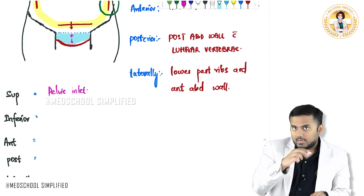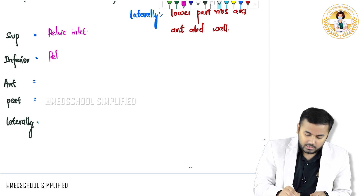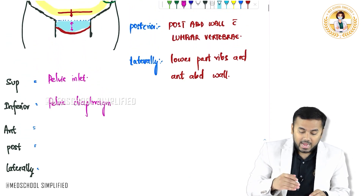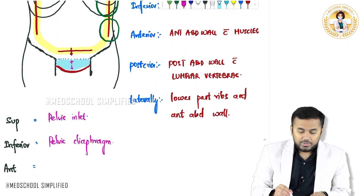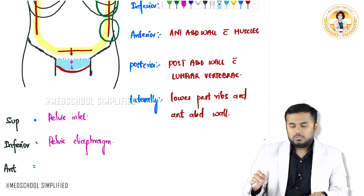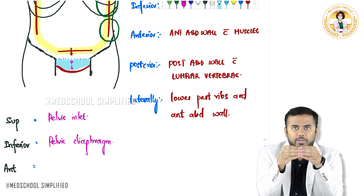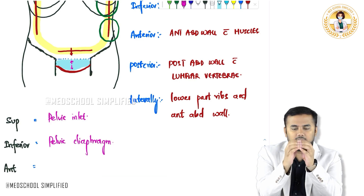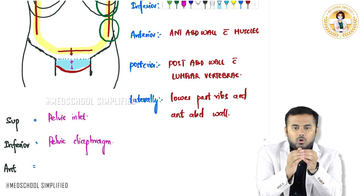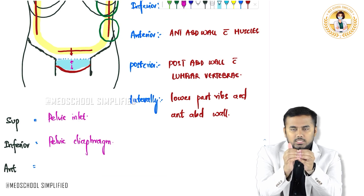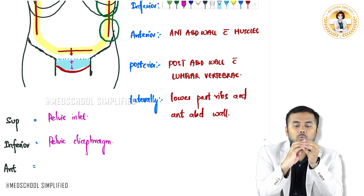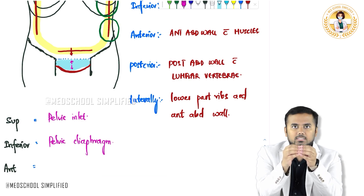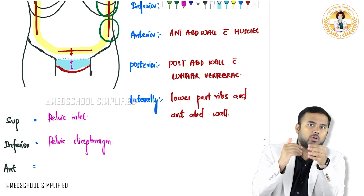Anteriorly, just imagine guys — between the two hip bones, both the hip bones are joining together to form the pubic symphysis. Just behind this hip bone, whatever cavity you can see here is called the pelvic cavity. The top is the pelvic inlet and the bottom part is the pelvic diaphragm. Anteriorly you have got the pubic bone, and on the back you will have the sacrum and coccyx.